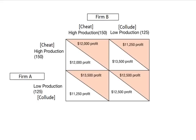$12,000 is greater than $11,250, so firm A would cheat. If we hold firm B's action constant to collude, then firm A has the choice between $13,500 and $12,500, and they will take the $13,500. So no matter what firm B does, firm A will choose to cheat, and thus we know we will be in the top row.